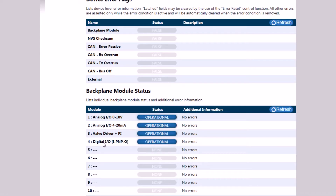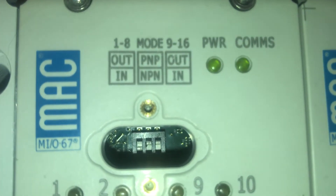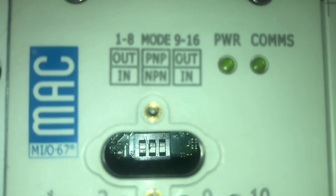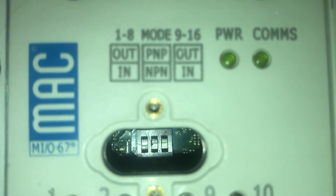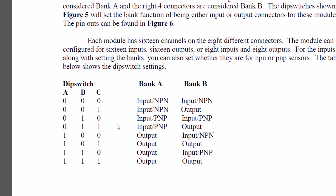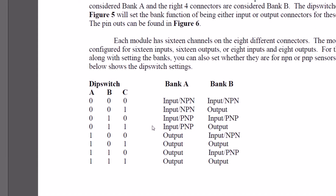We will also need to determine the type of digital I/O module that's been configured using the dip switches. The web config utility has identified that this module is set up for PNP input and output. You can also determine that by looking at the dip switches inside the module. The dip switches are set 0, 1, 1, which indicate a PNP input configuration for bank A and a PNP output configuration for bank B. This will be important later when we select the right config module setting in the AOI.